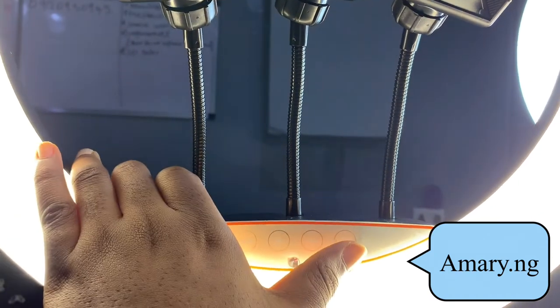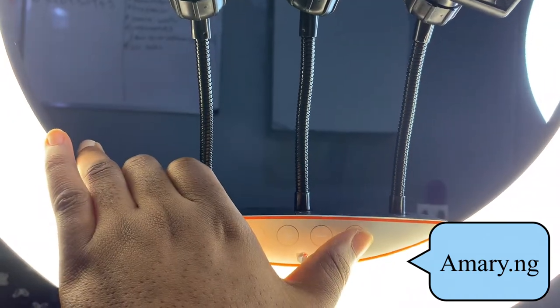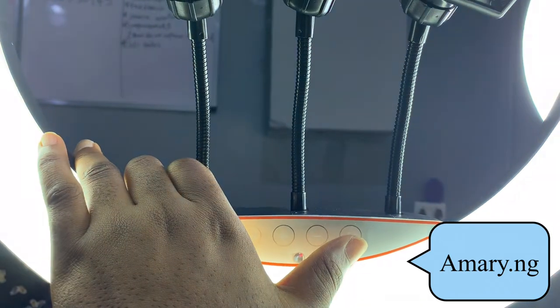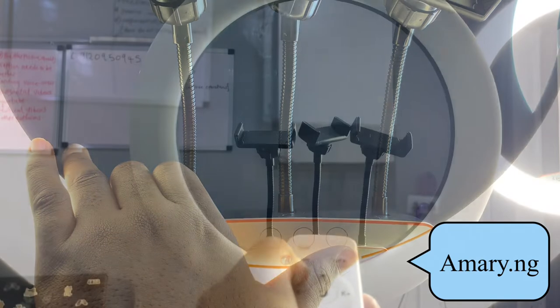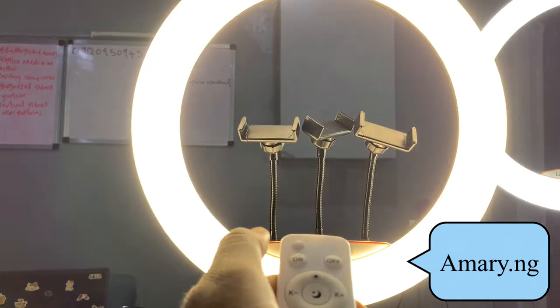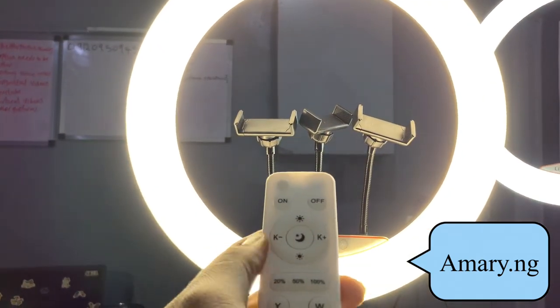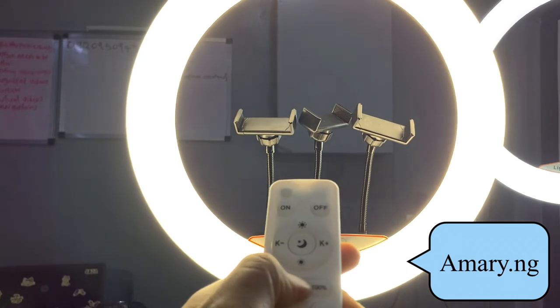The last button is for changing the different modes, as you can see. So this is the first mode, the second mode, and then the last mode. It also comes in the remote, so if you're far away from the ring light and you want to operate it, you can easily use it.